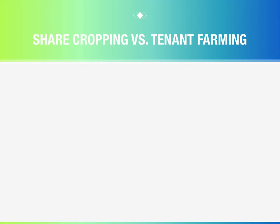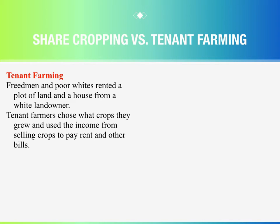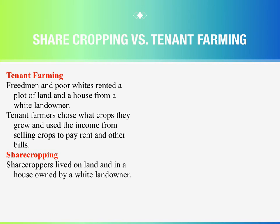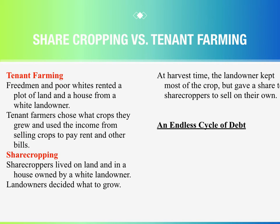Sharecropping vs. Tenant Farming: Tenant farmers — Freedmen and poor whites — rented a plot of land and a house from a white landowner. Tenant farmers chose what crops they grew and used the income from selling crops to pay rent and other bills. Sharecropping was different. Sharecroppers lived on land and in a house owned by the white landowner. Landowners decided what to grow. At harvest time, the landowner kept most of the crop but gave a share to sharecroppers to sell on their own. This created an endless cycle of debt.